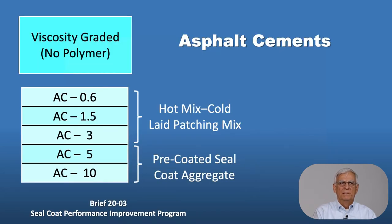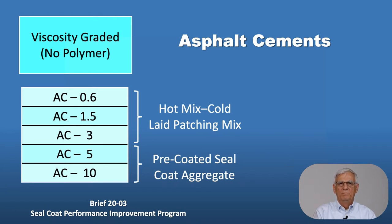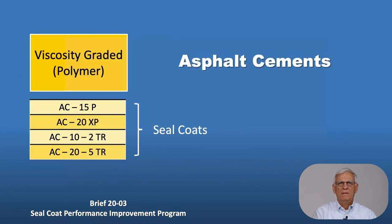Looking at the non-polymer viscosity graded asphalt cements: hot mix cold-laid patching materials are sometimes made with AC 0.6, 1.5, and 3, and we often pre-coat seal coat materials with AC 5s and 10s depending upon what part of the state we're in. For asphalt cements that do contain polymer, these are primarily used for seal coat applications.